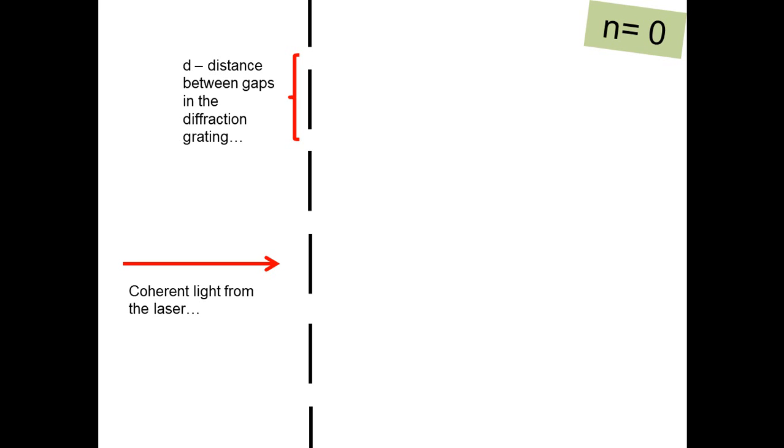The light is coming from the laser and it's coming through the gaps in our diffraction grating. One of those beams of light will just go straight through, and that would be the zero order, the light that just goes straight through the diffraction grating.